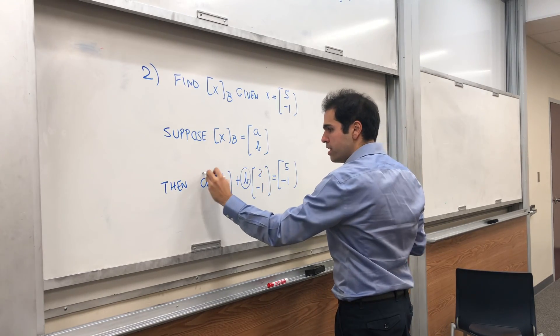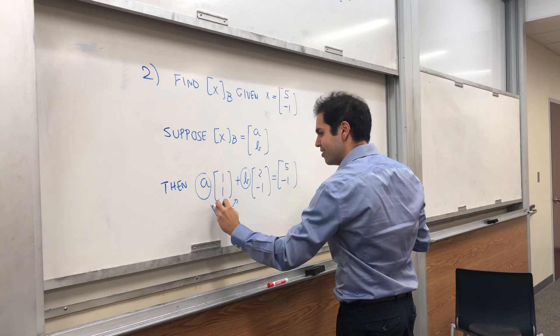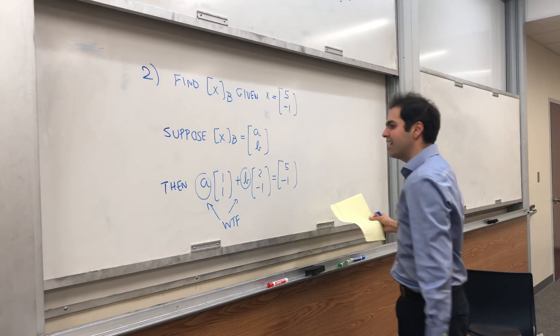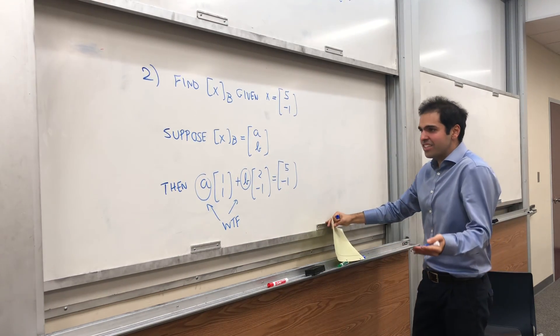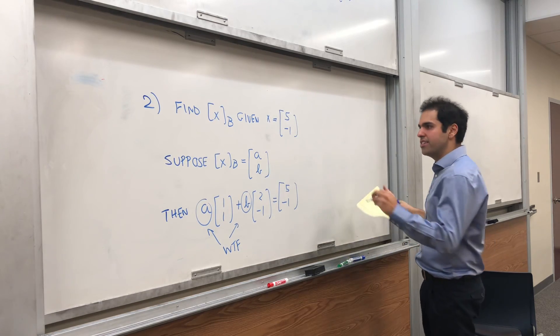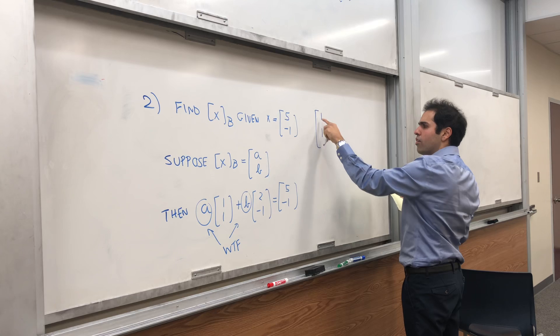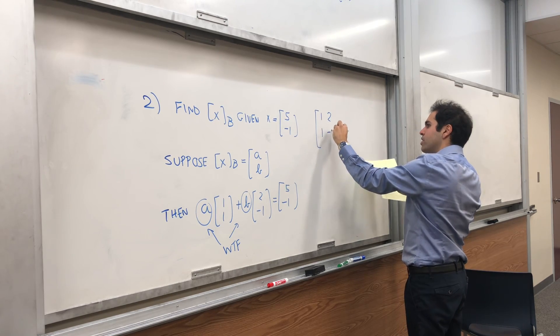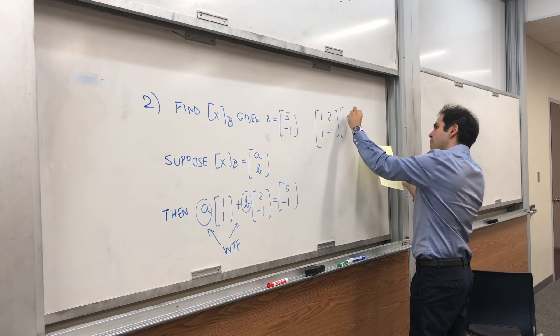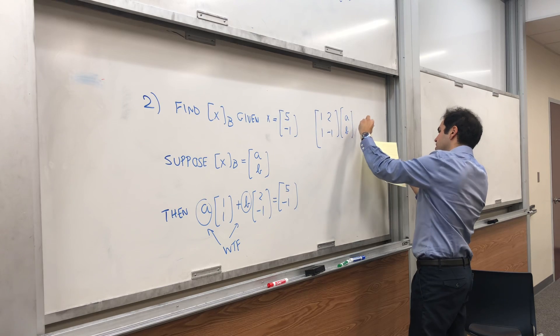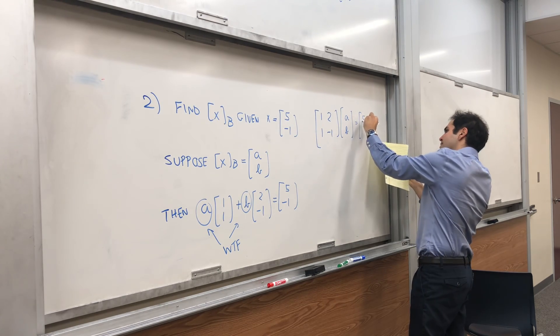And those things, well, we want to find. So WTF means want to find. And notice, this just ends up solving a system of equations. So all we need to do, we want to solve [1,1; 2,-1] times [a;b] equals [5;-1].